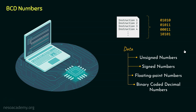Based on the interpretation, the sequences of ones and zeros can have a unique value, pertaining to either instructions or different types of data. We have seen examples involving unsigned and signed numbers. Floating point numbers help us deal with fractions, but today we are going to mainly focus on binary coded decimal numbers, or BCD numbers.